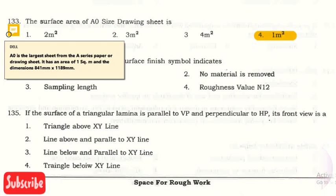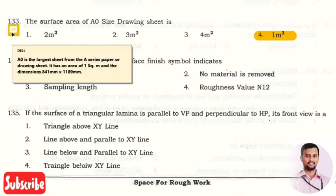So what is this A0? A0 is the largest sheet from the A series paper or drawing sheet. It has an area of one square meter and dimensions are 841 mm into 1189 mm. So that is the dimension of this A0 size, and this is the largest paper in the A series drawing sheets.